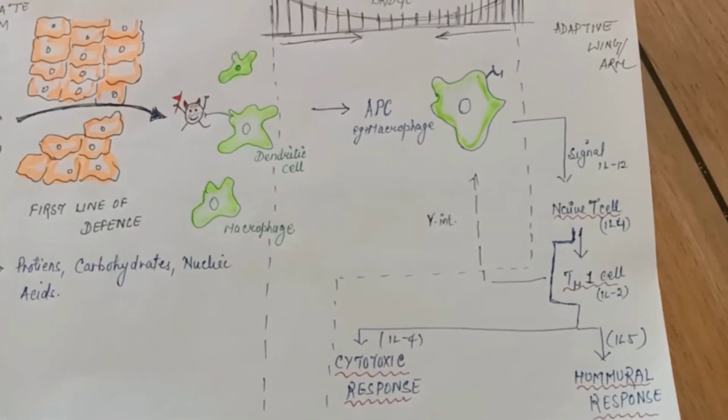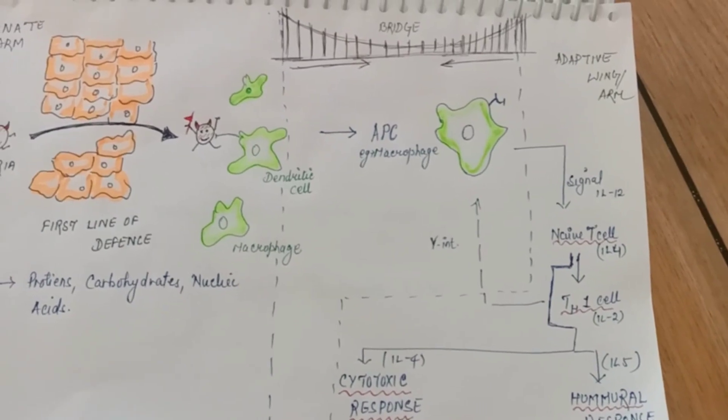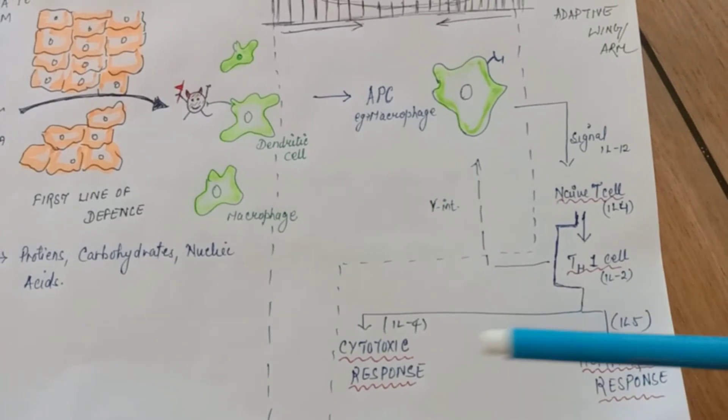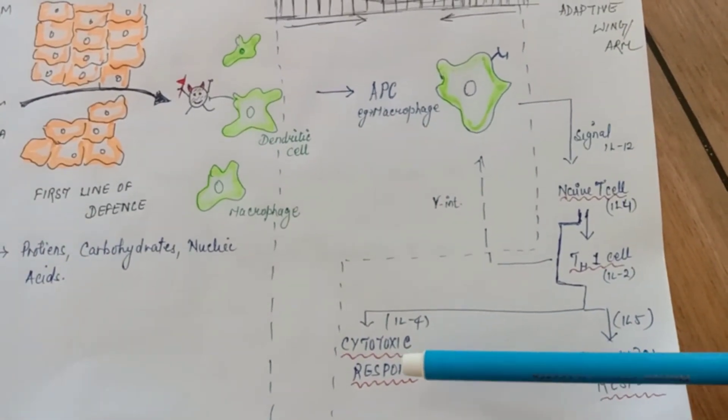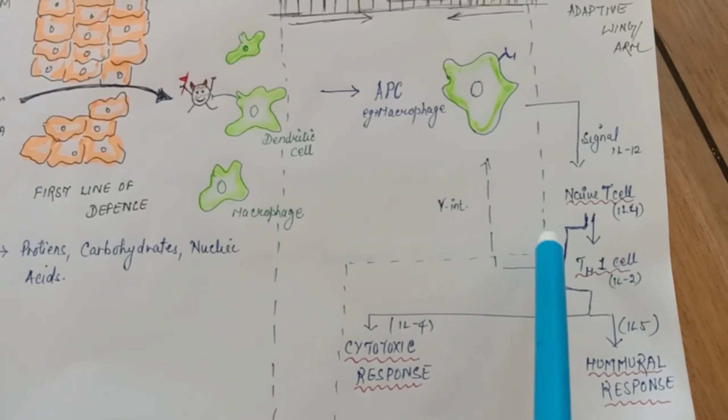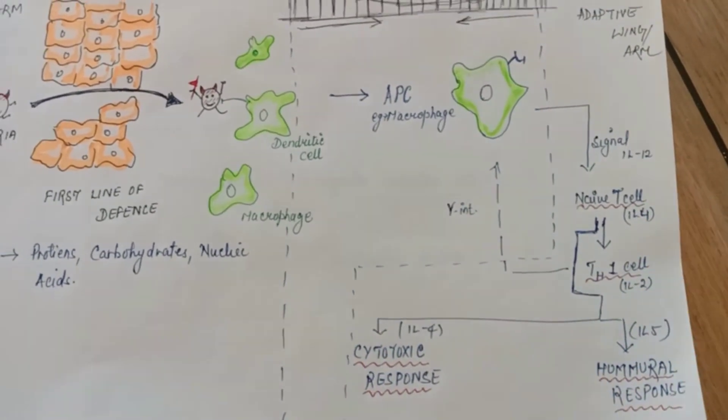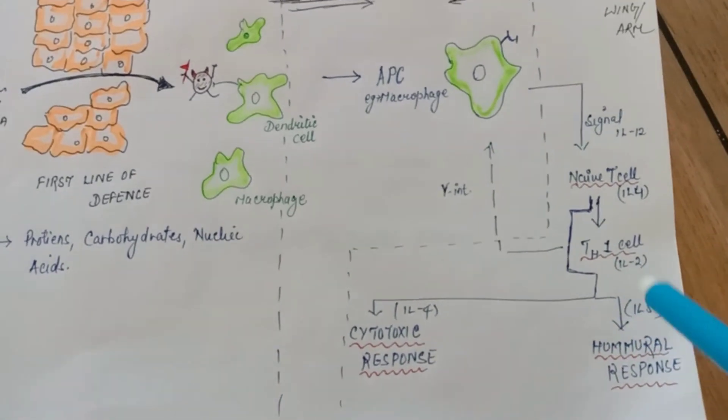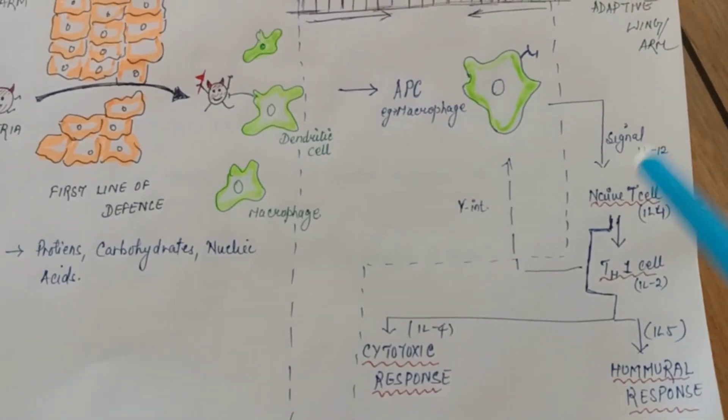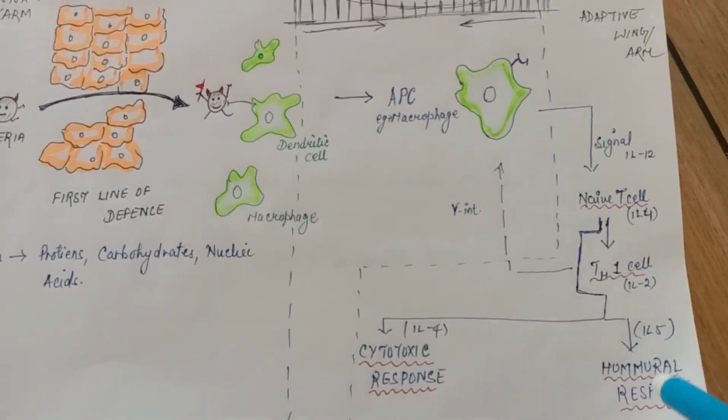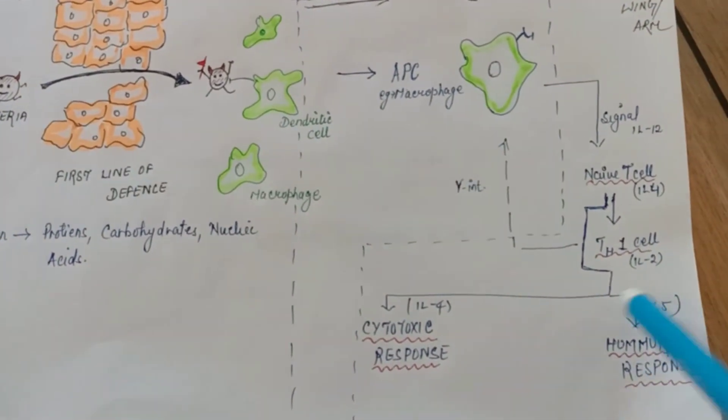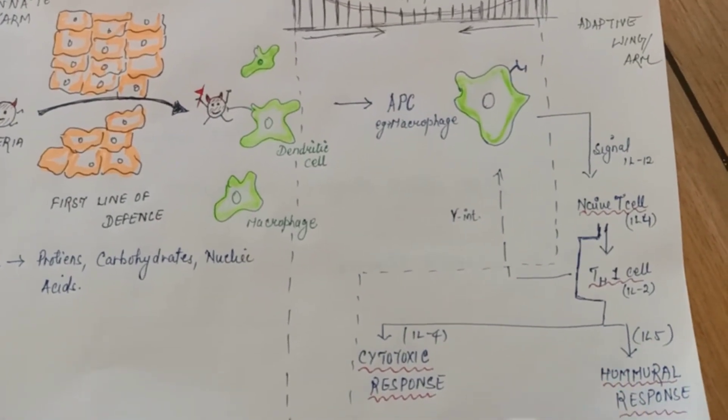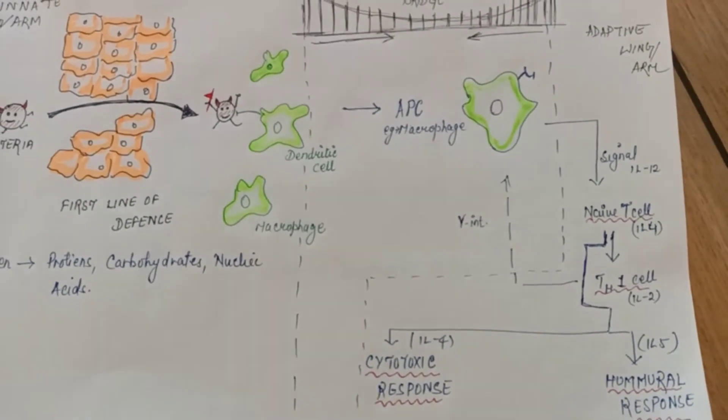This APC will present the antigen and further two pathways can be activated: first is humoral and second is cytotoxic. The antigen which is activating this T cell and then further humoral response will happen, they are antigen T cell-dependent. First they'll activate T cell, then they'll activate B cell. Activation of B cell is humoral response. Then only it will convert to plasma cell and further secrete antibodies.